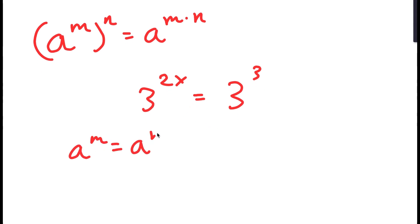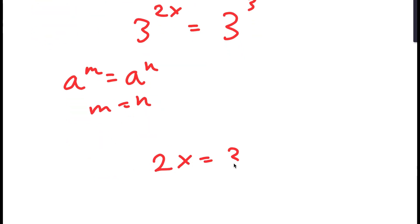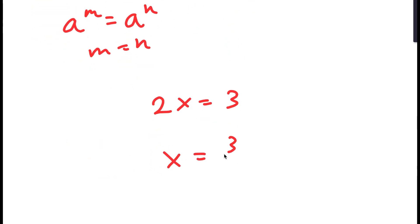And if I have something in the form a to the power of m is equal to a to the power of n, this means that m is equal to n. So 2x is equal to 3, meaning x is equal to 3 over 2.